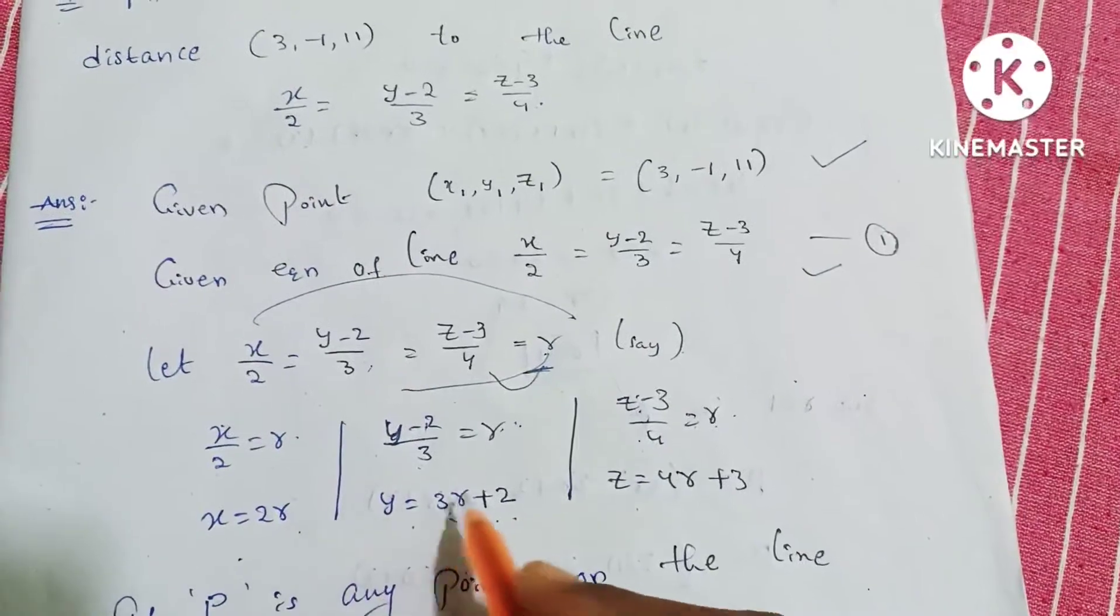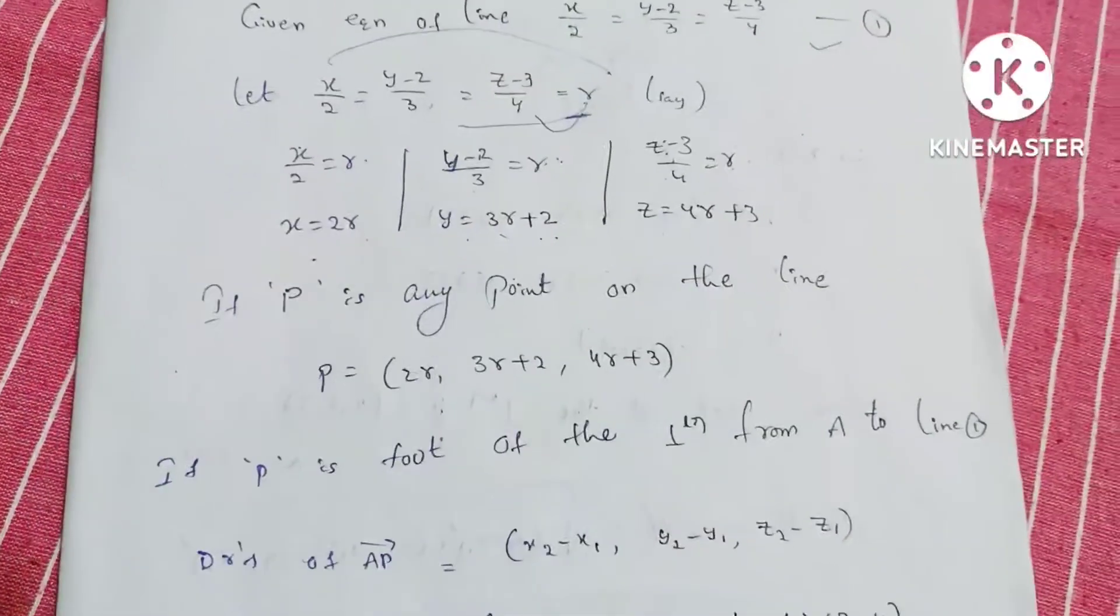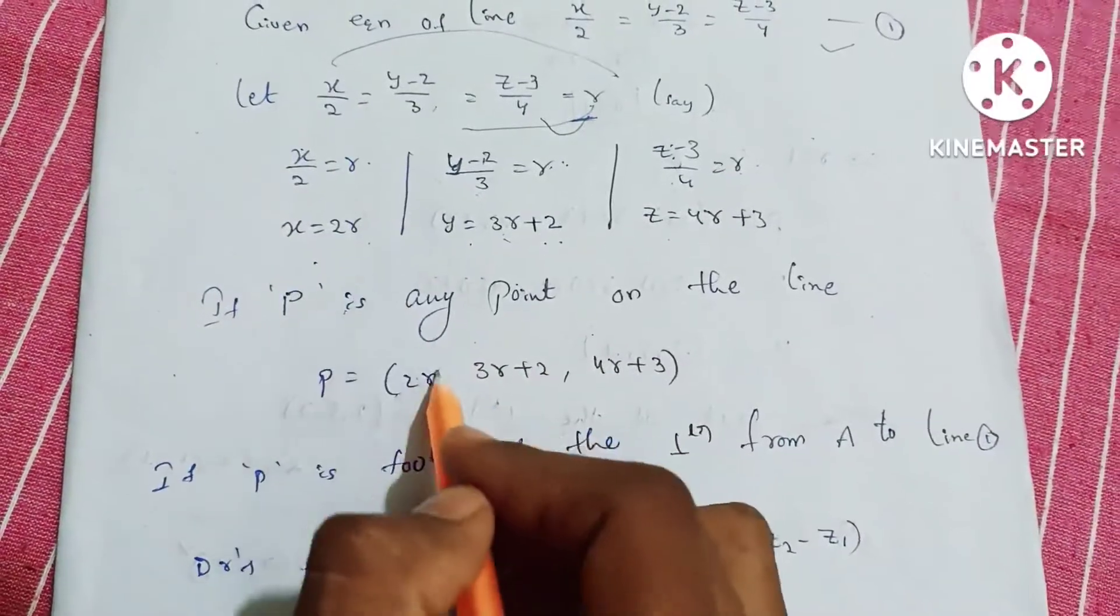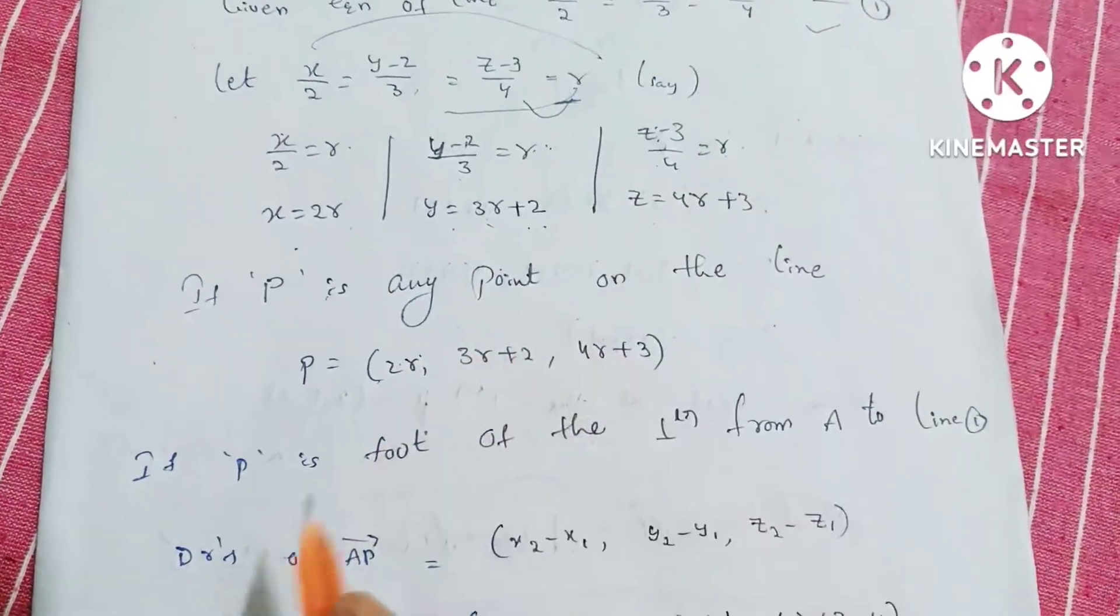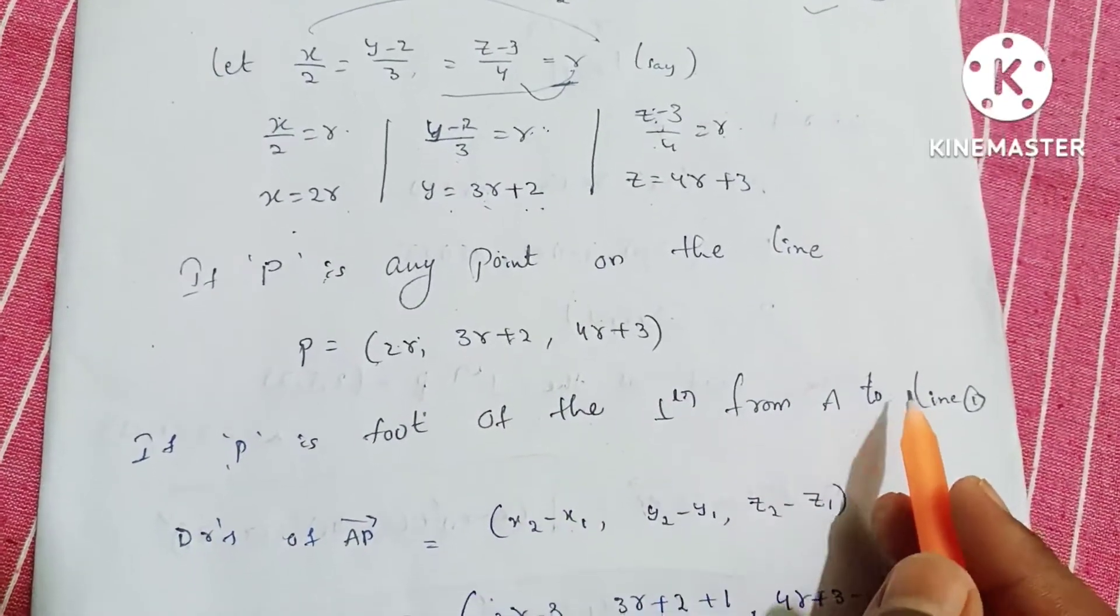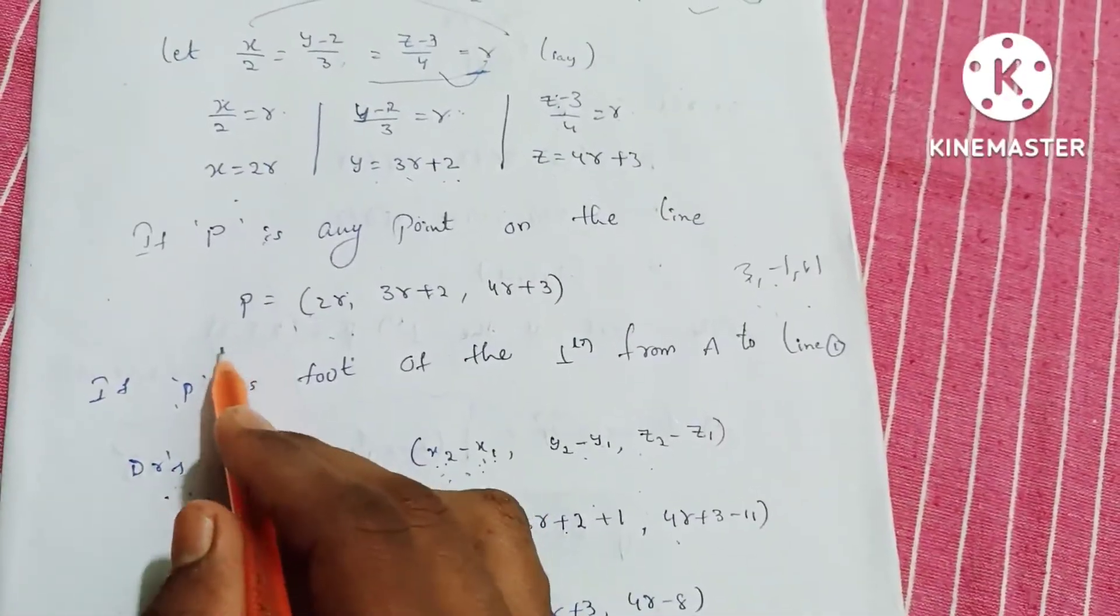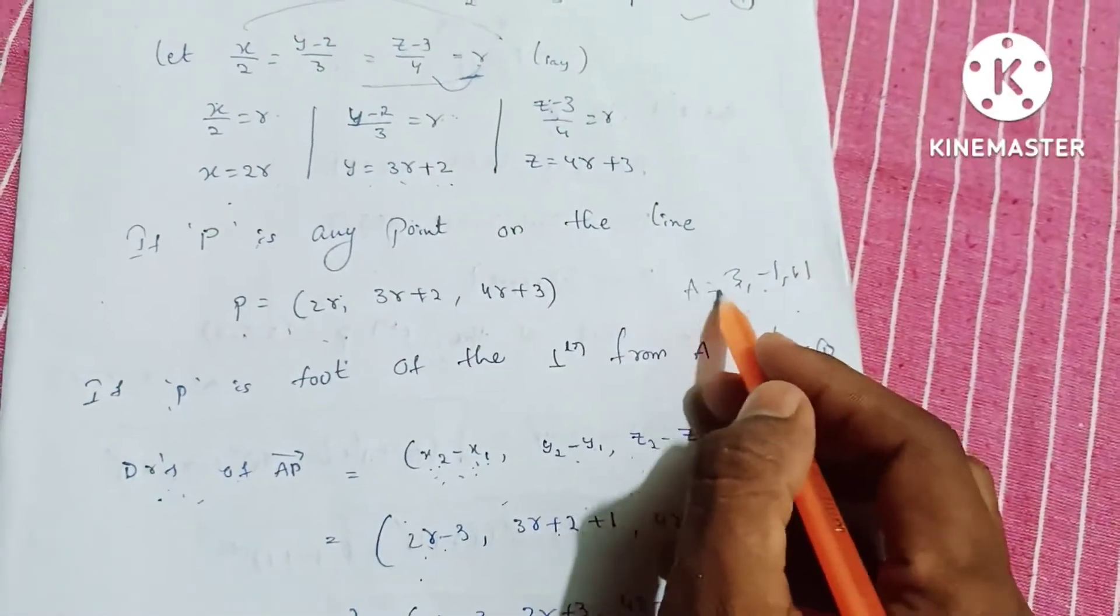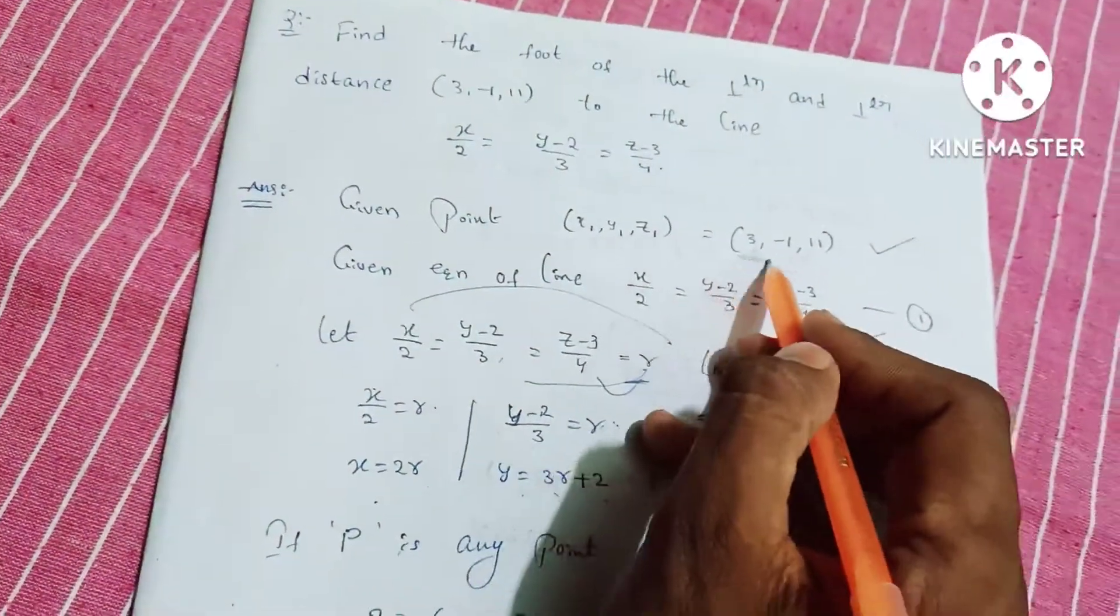So the x, y, z values we have. If P is any point on the line, P equals the point we write. If P is the foot of the perpendicular from A to line one, then we need the direction ratios. The P point and the given point (3, -1, 11).